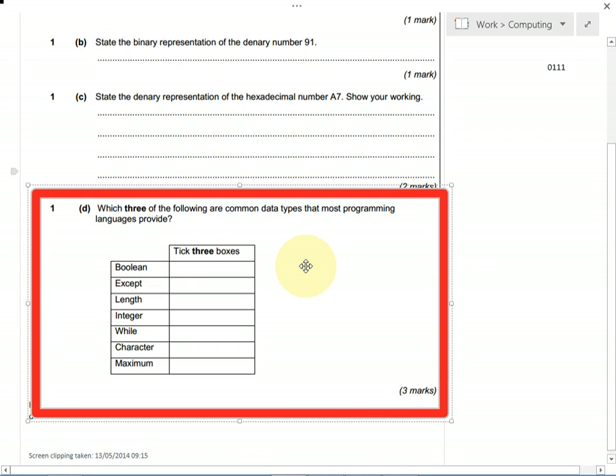This question is checking to see if you understand different data types. Remember, there are different types of data that you can store in a variable when you're programming. It's worth three marks, which means there are three ticks that you've got to go for.